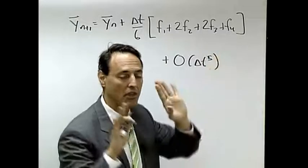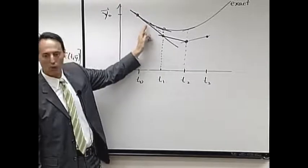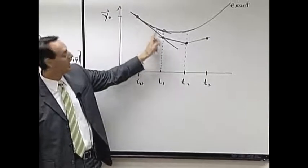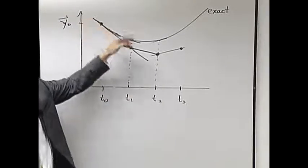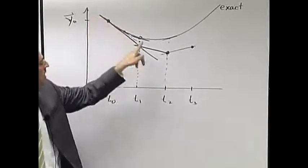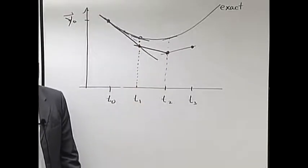So what the Runge-Kutta does is it says to get to the future, I will sample the slope here, sample the slope here twice in the middle, and sample the slope on the other end. The four samplings of slope to try to get me from here to here as close to that dot as possible. That's Runge-Kutta fourth-order.